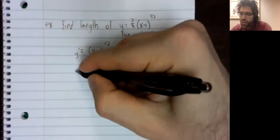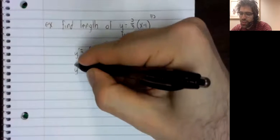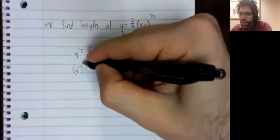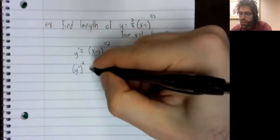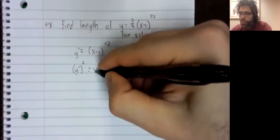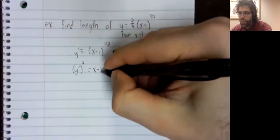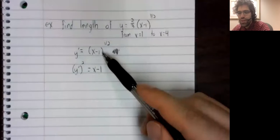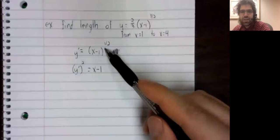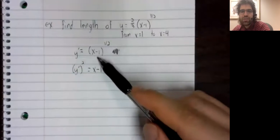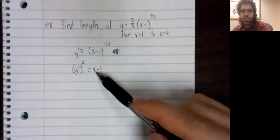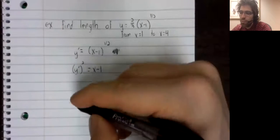And continuing this theme, that you can see this problem was designed to work out nicely. When we take the square of this square root, we, of course, just get x minus 1.